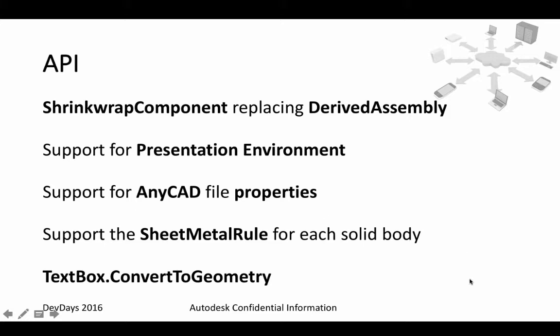The last slide concerning Inventor is API-related. Just a couple of changes: shrink wrap component is replacing derived assembly object. There is support for the presentation environment — in the last release there was a huge overhaul and complete recreation of the presentation environment, and unfortunately at that time there wasn't time to provide APIs for it. Now in the next release of Inventor there will be API support for the presentation environment. There is also support for AnyCAD improvements through the API, support for the sheet metal rule for each solid body, and support for converting a text box into geometry.